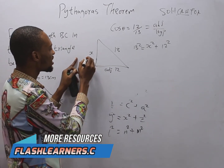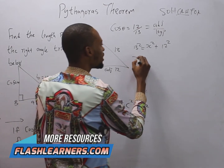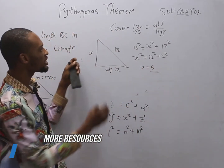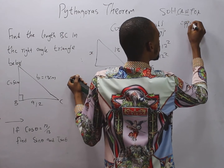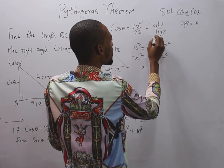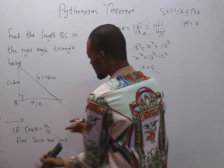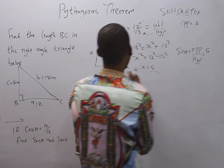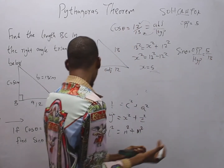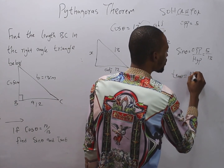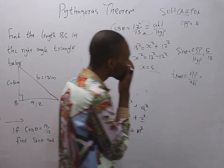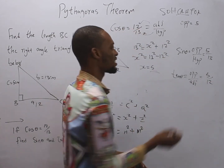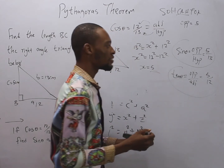Looking at the question we just solved, we were given AB = 5 and solved to get BC = 12. This means the opposite here equals 5. So opposite = 5, adjacent = 12, hypotenuse = 13. With this, sin θ = opposite over hypotenuse = 5/13. Similarly, tan θ = opposite over adjacent = 5/12. So sin θ = 5/13 and tan θ = 5/12.